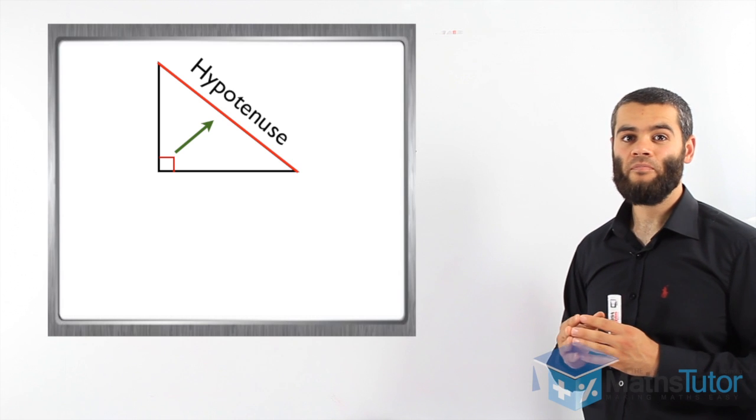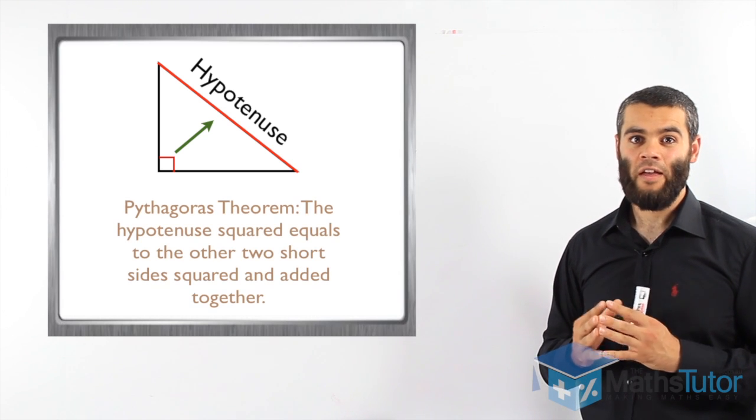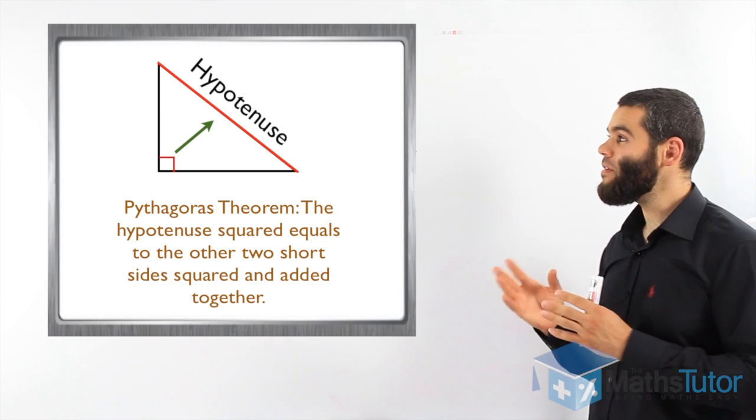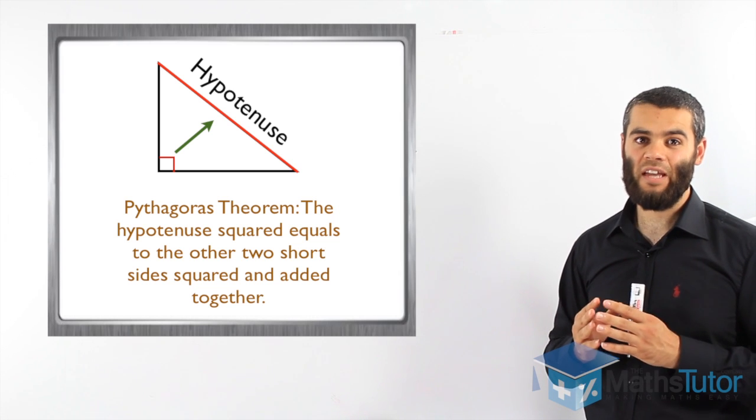Now, this hypotenuse, Pythagoras found out that if you square it, it equals to the other two short sides squared and added together.